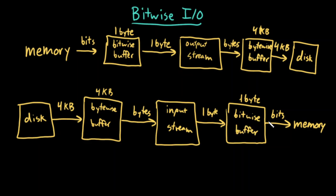Once that bitwise buffer is empty — so I've read all eight bits — I read the next byte from my input stream, and then again I can read bit by bit. The moment I've exhausted all of the bytes that were in my bytewise buffer, since I read one byte at a time to my bitwise buffer and one bit at a time from there, I read the next big chunk from disk. This is just like our bytewise reading workflow, but with the bitwise buffer added. My bitwise buffer reads a single byte at a time, and then my program reads one bit at a time from the bitwise buffer.